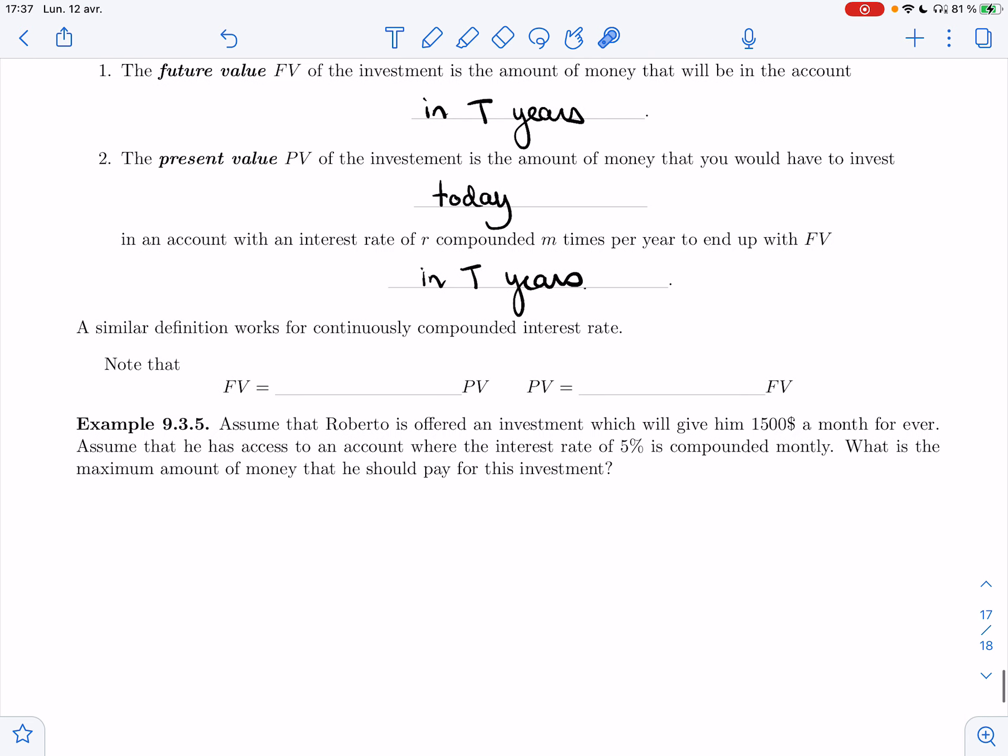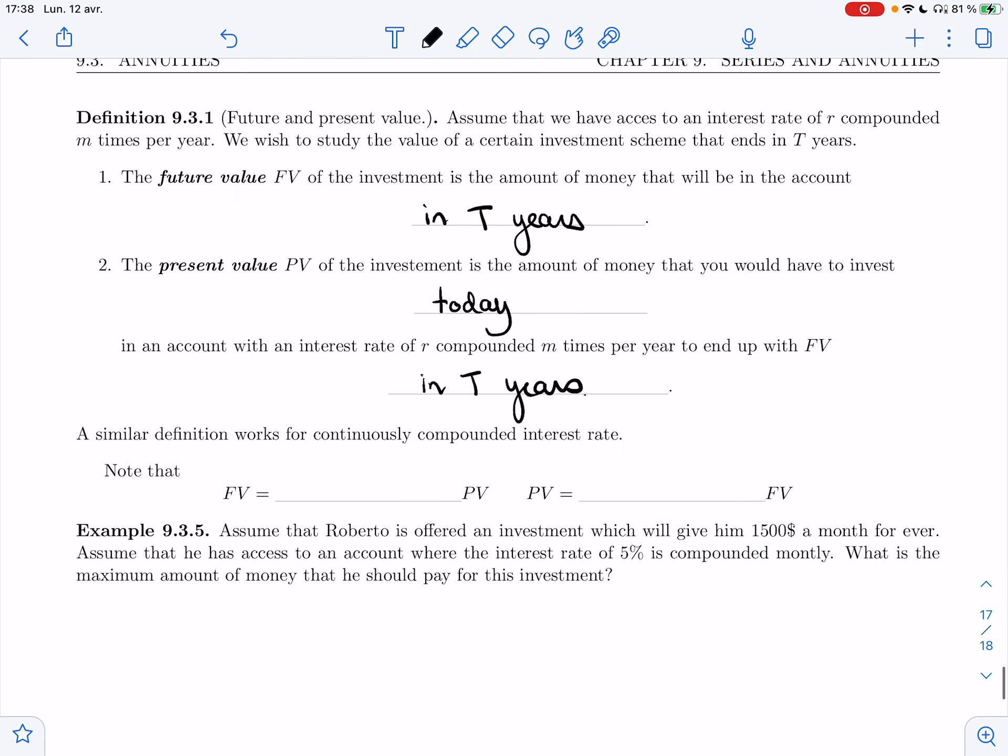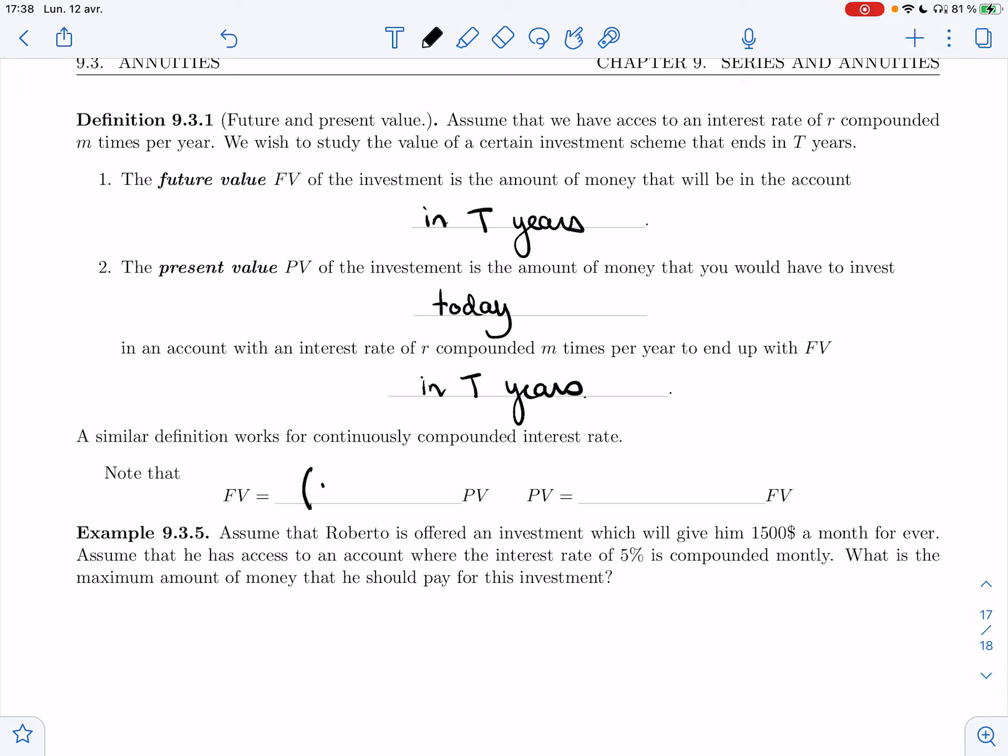A similar definition works for continuously compounded interest rate. Whatever type of interest you replace here, I just chose this one because that's the one we use most often in this section, but it works just as well with continuously compounded. So note that future value, you start with present value and you invest it in that account for T years. So (1 + R/M) because it's M times a year, and then T times M.